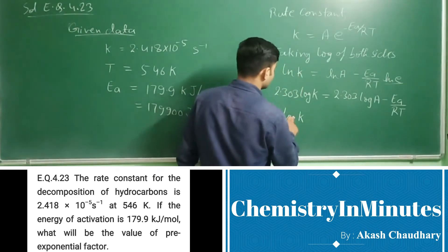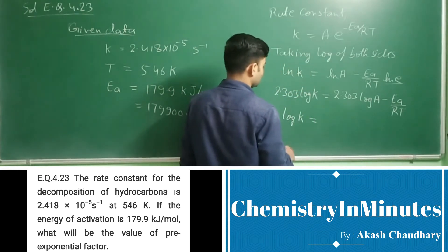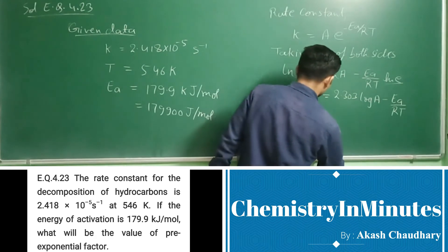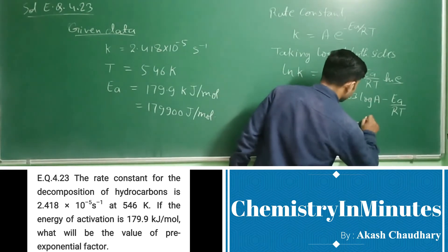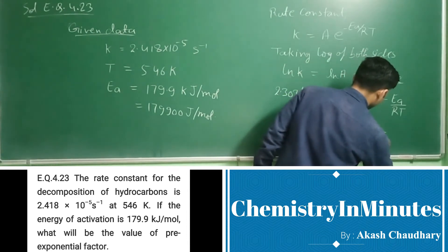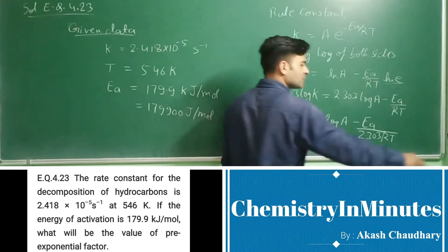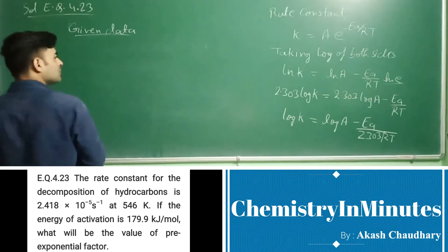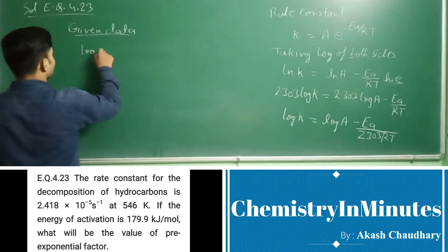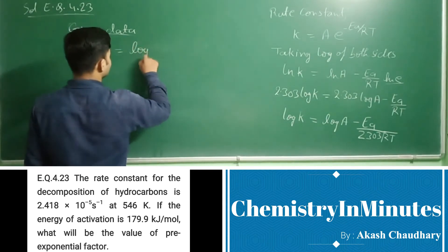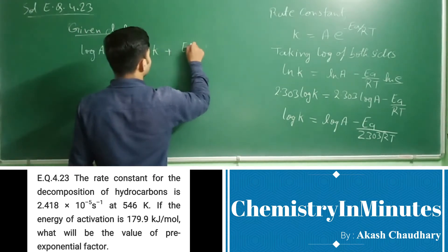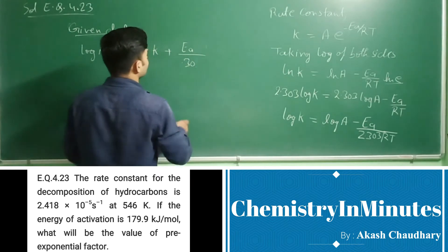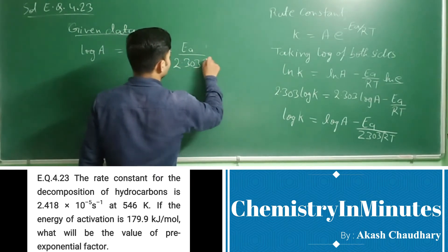This can be written as log K equal to log A minus E_A upon 2.303 RT. On rearranging this, we can write it as log A equal to log K plus E_A upon 2.303 RT.